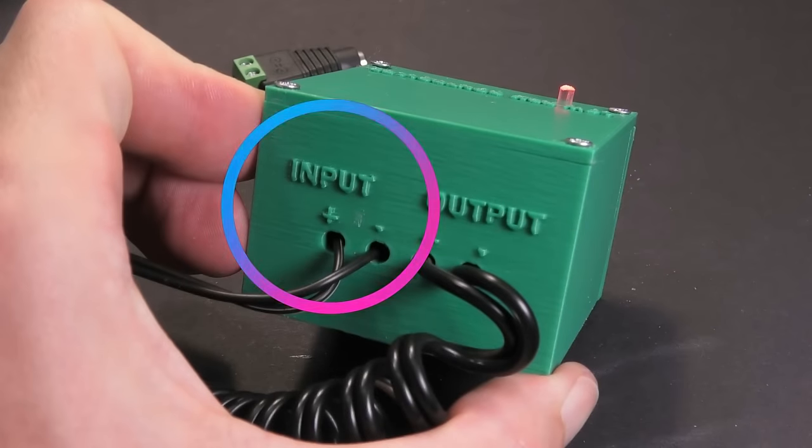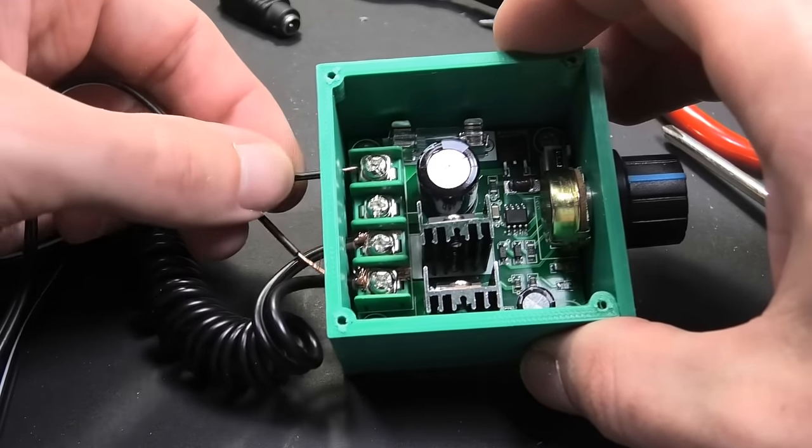Again, I remove the insulation and attach the wires to control board, this time on input.